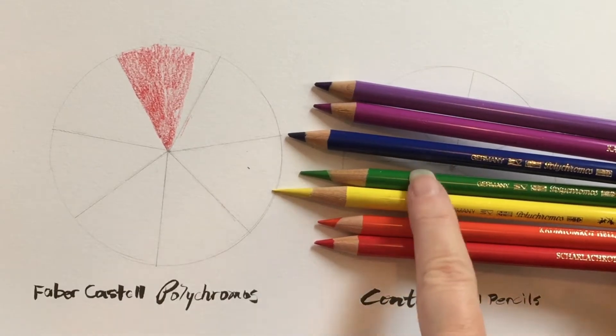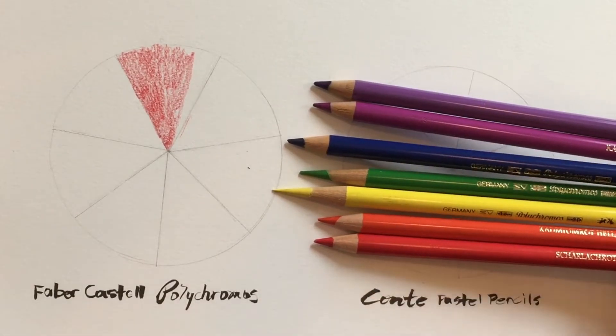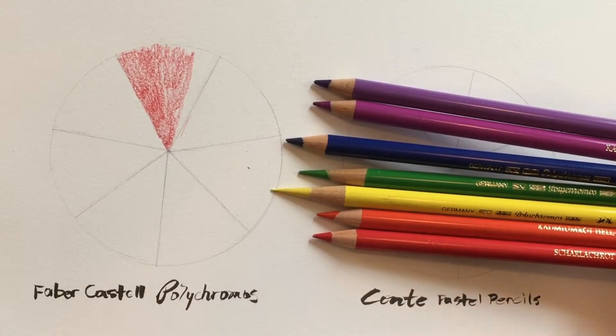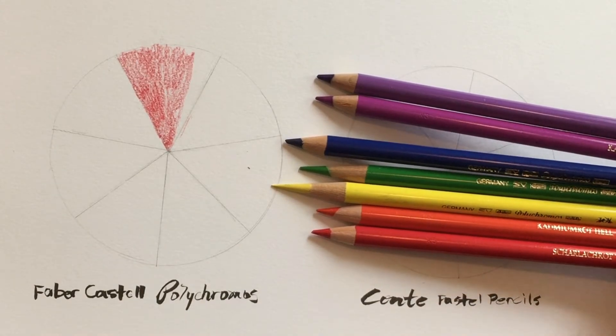ROYGBIV meaning red, orange, yellow, green, blue, indigo, and violet. Basically all the colors that you would find in your basic crayon box when you were a kid.